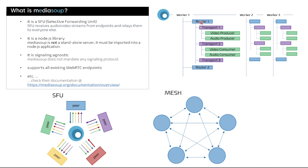So when it comes to the concept of rooms, we use the router to represent a room. Router1 is a room where you can have multiple transports. Within each transport you can have a video producer and an audio producer, and another transport can be a video consumer and an audio consumer, and so on. A router is created from a worker, so you can have many routers per worker. You should create one worker per CPU core — a worker runs in a single CPU core. So if you have four CPU cores, you should limit that to four workers in your MediaSoup server.